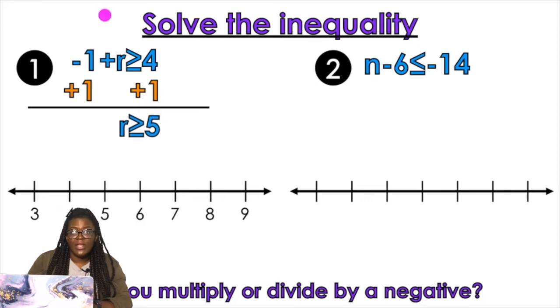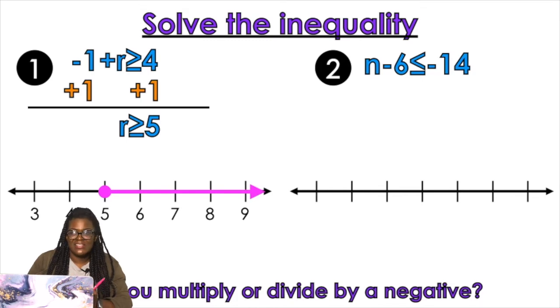Look at my number line — find five. What kind of circle is that? A closed circle. And we're going to go to the right. Easy peasy lemon squeezy.